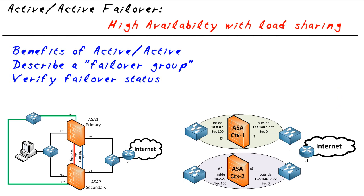Now, what's the challenge with that? Well, for some people they might think: I've got two firewalls, they're both perfectly capable of forwarding traffic. It's a shame to have one do all the work and the other act as a standby. So if — and only if — on the Cisco ASA we are using virtual firewalls in multiple mode with multiple contexts, what we can do is use an active/active configuration.